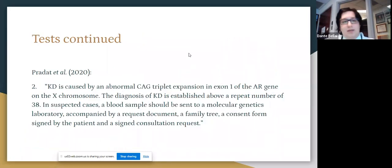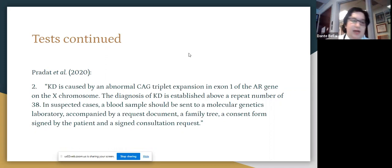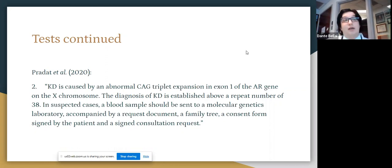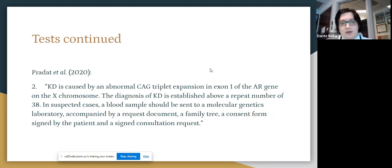The most important test is genetic testing for Kennedy's disease. As mentioned, it is a CAG triplet expansion in the androgen receptor gene on the X chromosome. If a patient has over 38 CAG repeats, that is diagnostic for Kennedy's. PCR testing is recommended. Additionally, if possible, constructing a family tree to identify carriers, and testing relatives who show signs and symptoms, is also recommended.